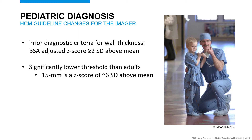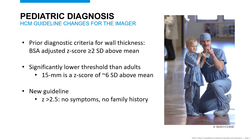The new guidelines seek to rectify that difference. They say that in a child with no symptoms, no family history, and no known pathogenic genetic mutation, a Z-score of greater than 2.5 should be used instead of two. But it's still okay to use a Z-score of two if there's a known family history or a known pathogenic HCM mutation.